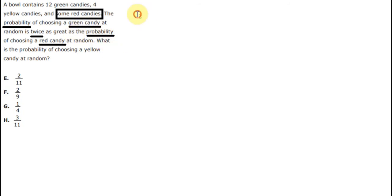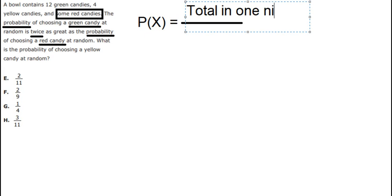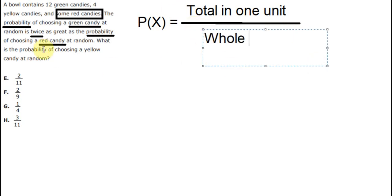And we need to know about the formula of probability. So probability is about the total unit in one unit. It means the green, or maybe the yellow, or maybe the red. We need to divide to the whole, which means we sum all the different kinds of units together. And this is the formula we need to use.